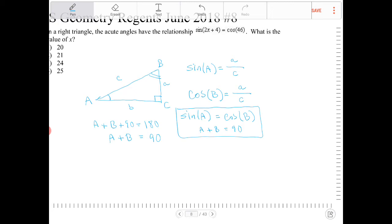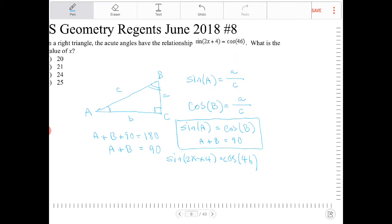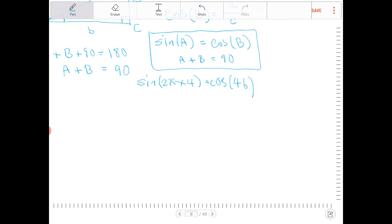So I have sine of 2x plus 4, which equals cosine of 46. Therefore, the arguments inside of this sine and cosine should be complementary. 2x plus 4 plus 46 should equal 90.